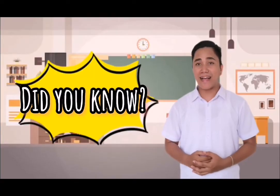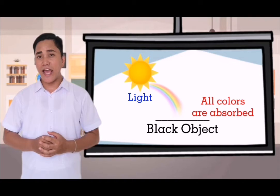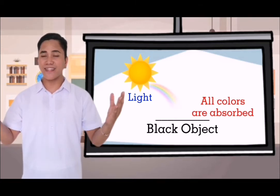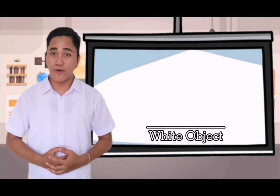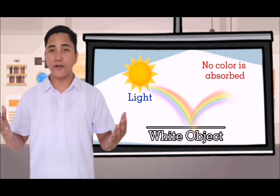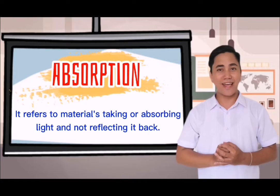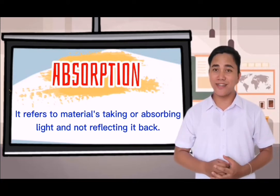Now, look at the screen — what color do you see? Black. Did you know that when an object appears black, all the light from the sun is being absorbed by that object and no color is being reflected? The opposite is true when an object is white — all the light is reflected and no color is absorbed. The process of materials taking in or absorbing light and not reflecting it back is called absorption.